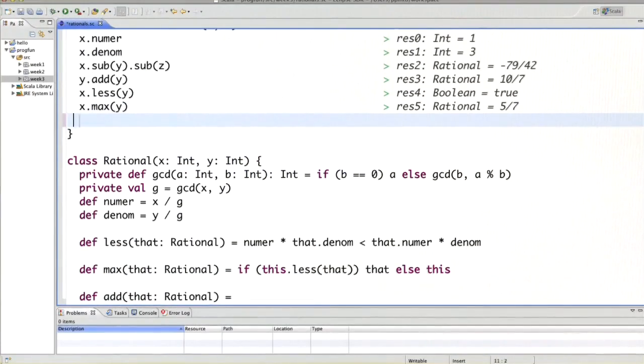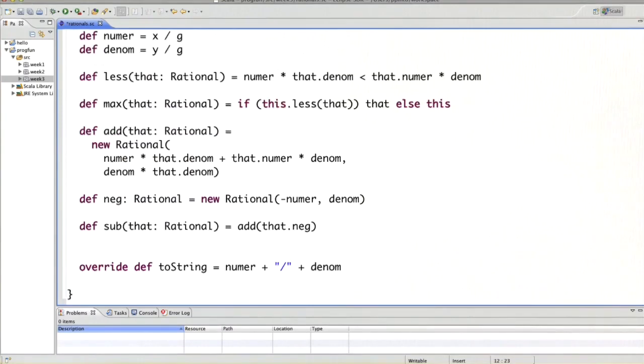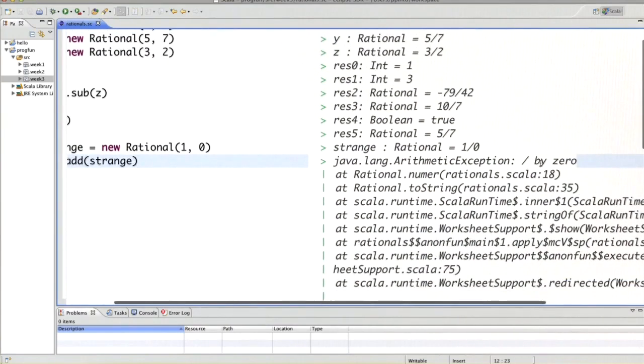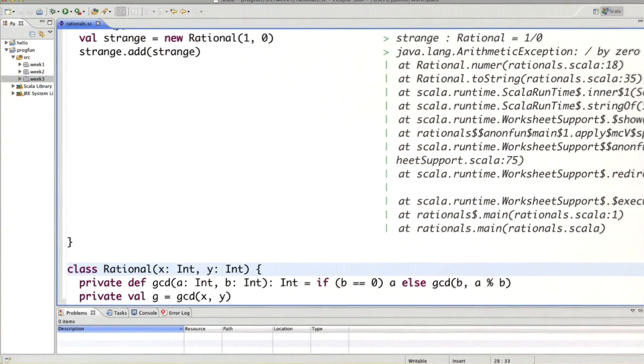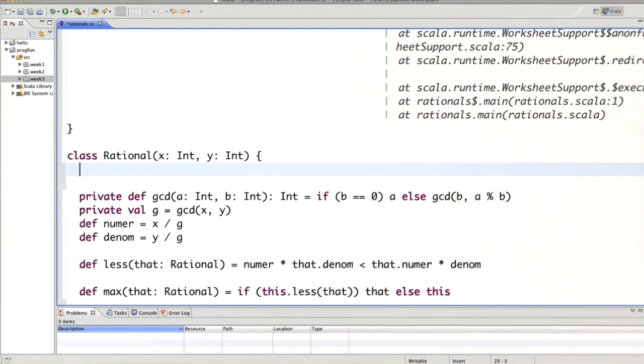As a next step, let's look at some of the restrictions that we have to impose on rationals. As a motivation, let me create a rational val strange equals new rational 1 over 0 and then add strange to itself. What do we get? We get an arithmetic exception division by zero because of course a rational that has a denominator of zero doesn't exist. It's not a rational number.